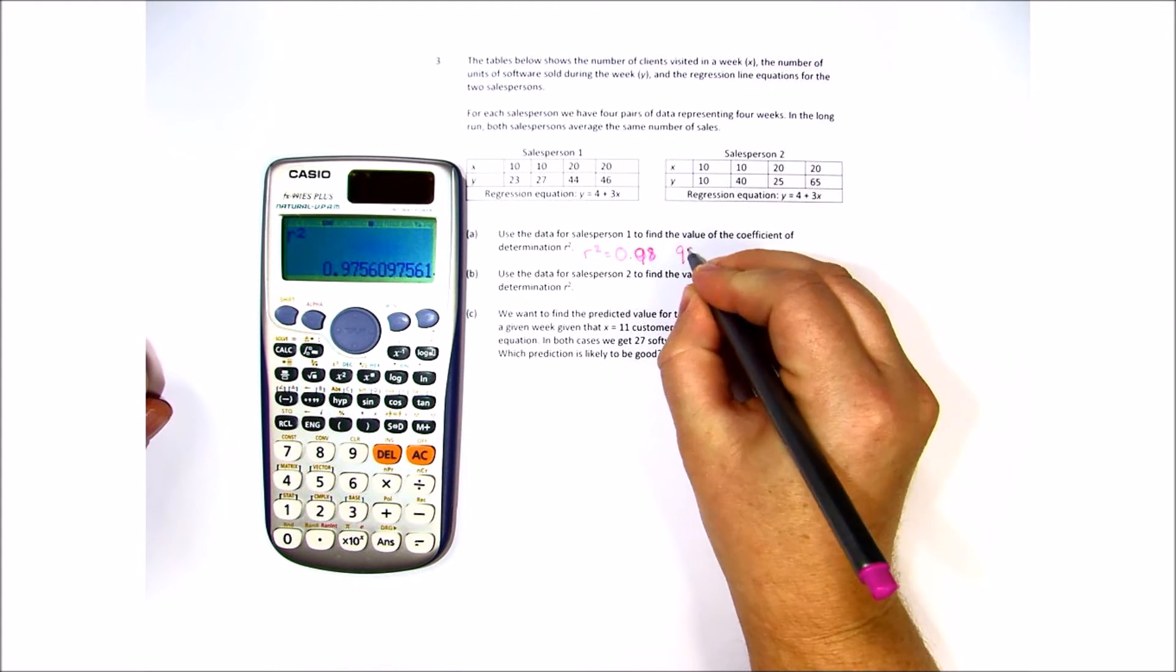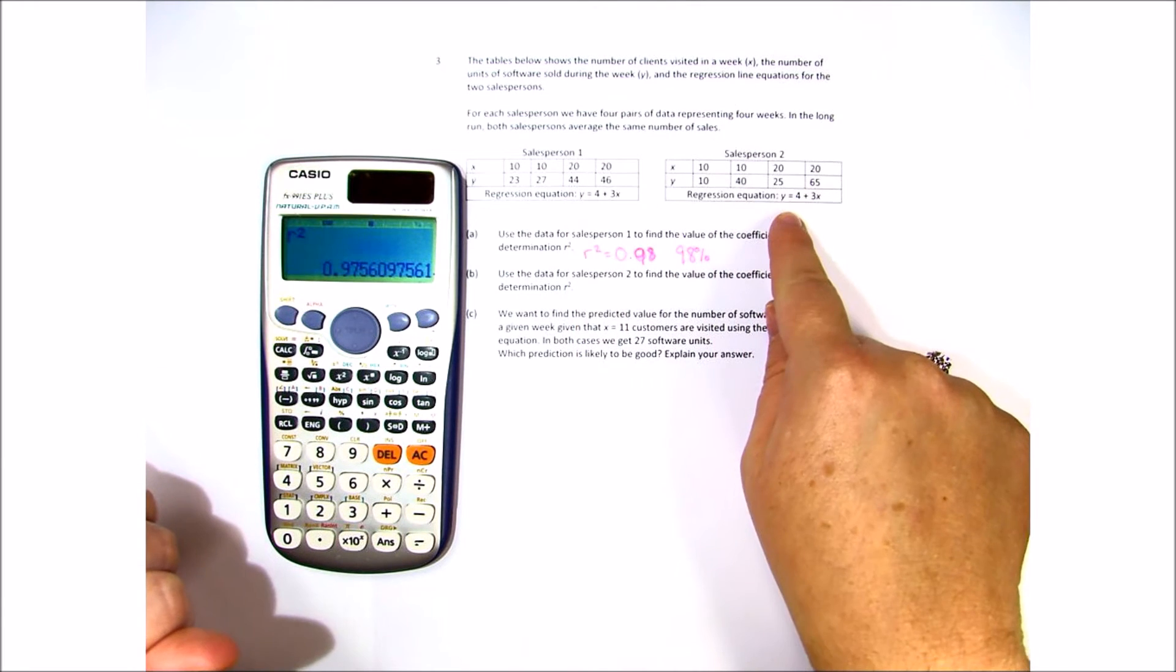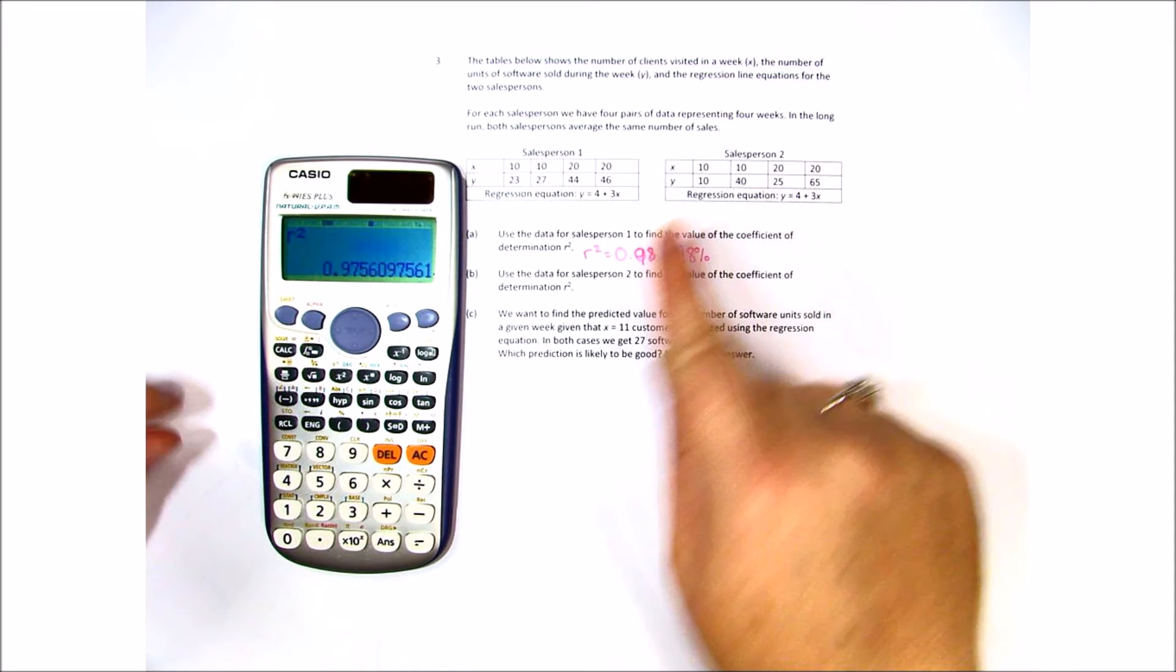In other words 98% can be determined. This is a very high number. So let's do the same with sales person 2. As you can see they also have the same regression equation.